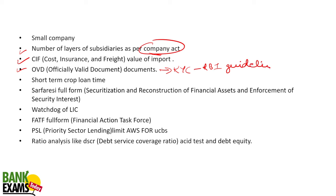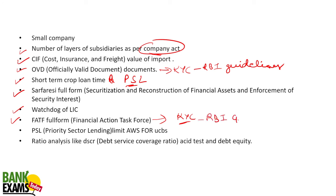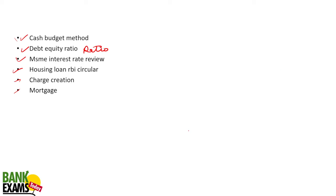We had covered the KYC guidelines recently — it's also available on YouTube. Short-term crop loan time limit was asked, which is from priority sector lending (PSL) — again an RBI circular. The full form of SARFAESI — a basic general question — appeared again. The FATF full form was asked from KYC guidelines; we had covered this exact question three days back in our KYC guideline class covering OVD and FATF. PSL limit for UCBs was another RBI guideline question — the third PSL-related question.